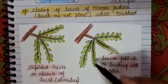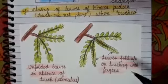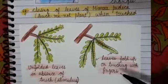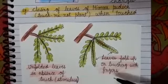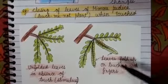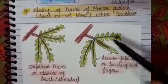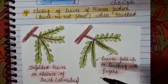No growth movement is taking place here — this is a reversible movement. Growth is an irreversible movement, so no growth movement is taking place in thigmonasty.